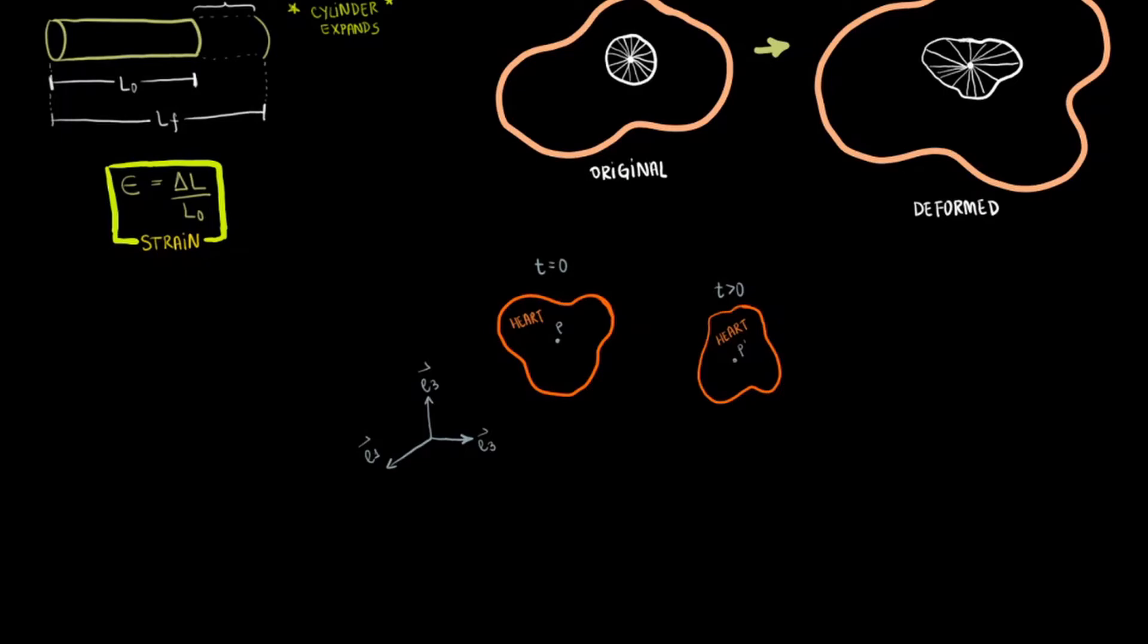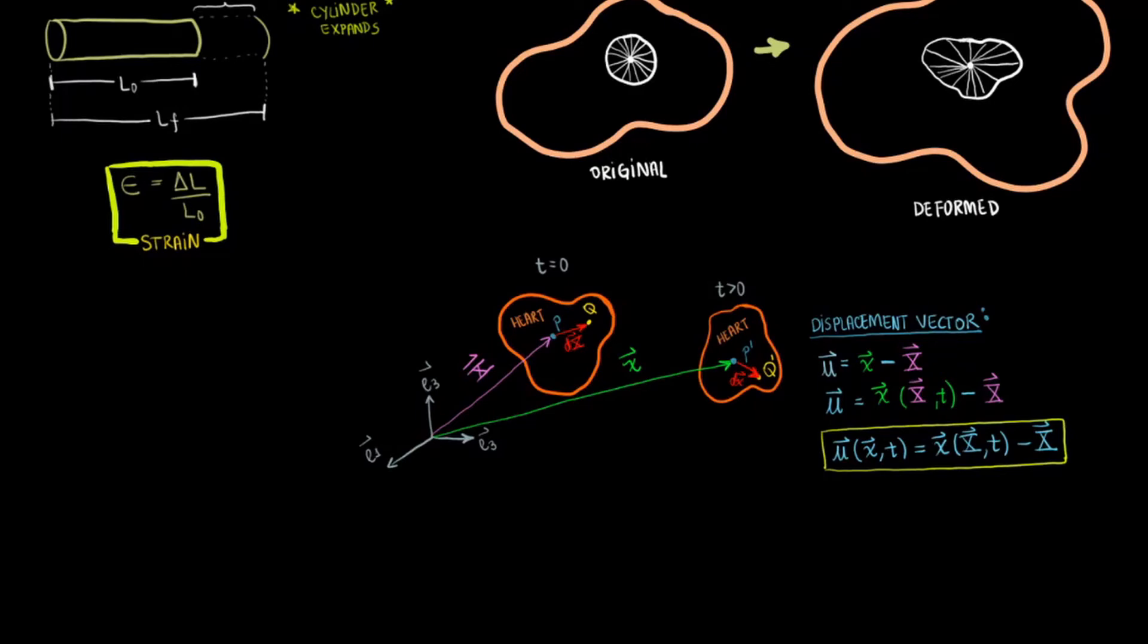If we focus on a point p in the original drawing, we would see that it moved around in the current or deformed drawing. Let's call p in the new position p prime. We can define a position vector x that represents the position of particle p in the undeformed configuration and a vector x representing the position of point p in the deformed configuration. Note that since these position vectors depend on the origin, they are not conventional vectors. Conventional vectors as true physical quantities do not depend on the origin. The displacement vector between p's old and p's new position would be x minus capital X. We will call this displacement vector u.